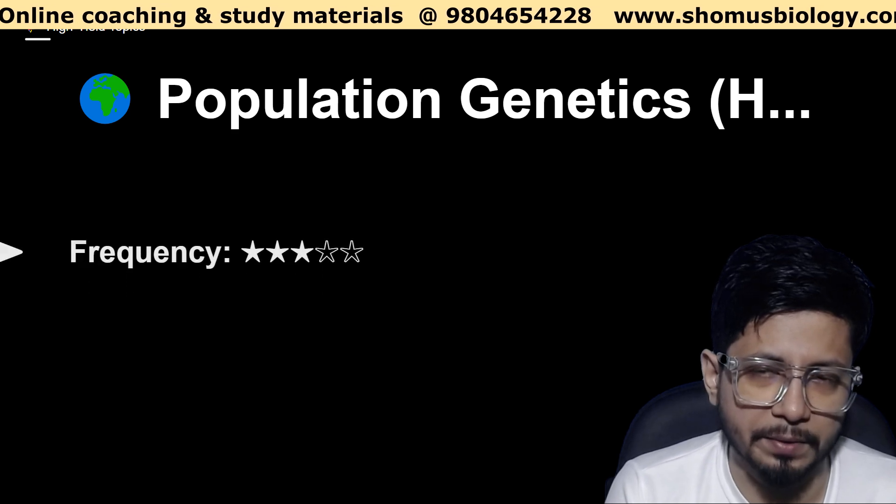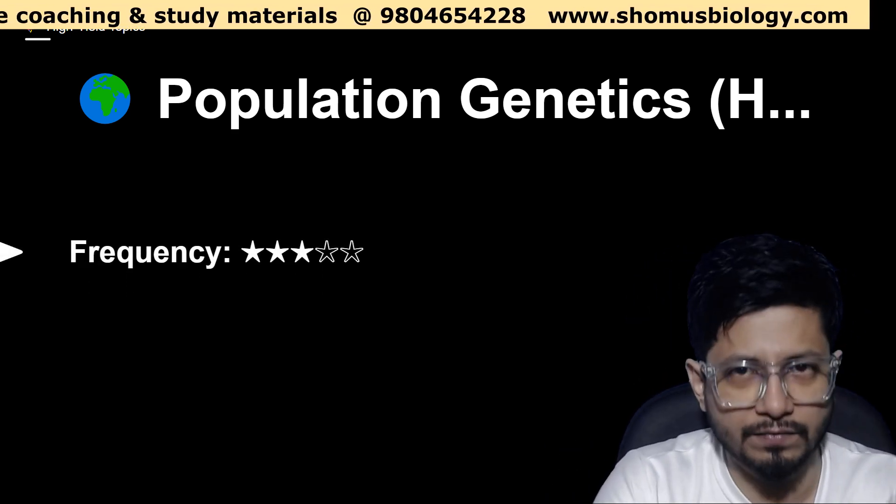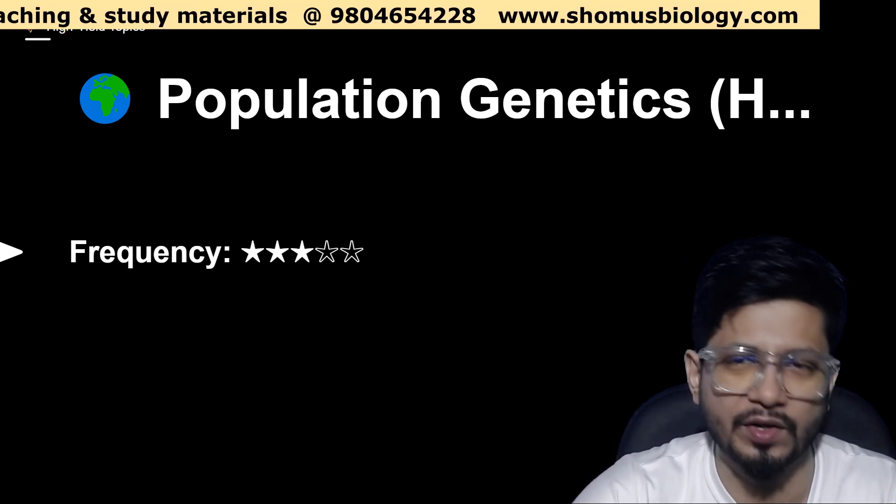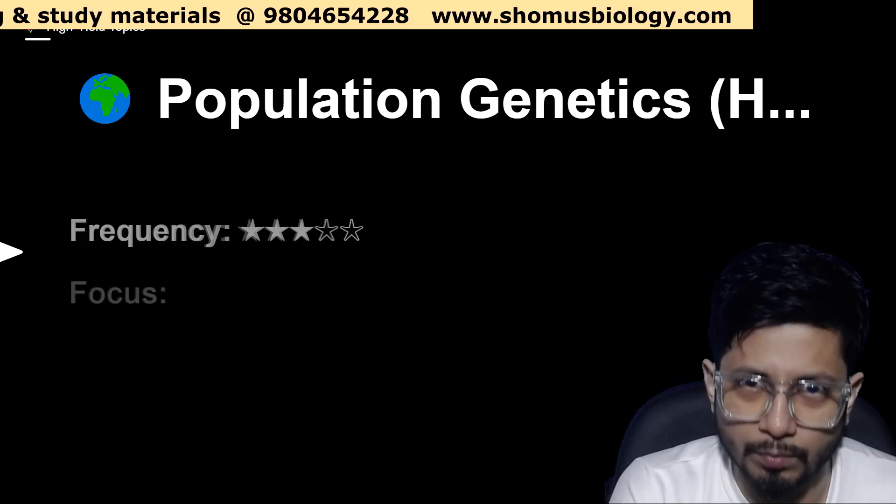This unit is tagged with unit 11. So this part of genetics is actually population genetics. The frequency of repeated questions is 3 stars out of 5, so moderate.